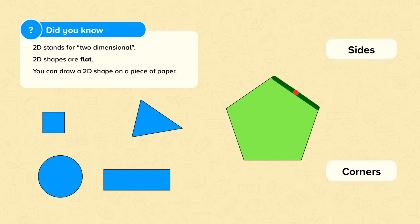This is one side of the shape. So I have a side here, here, here, here, and here. These are all sides. In total I have one, two, three, four, five sides in this shape.